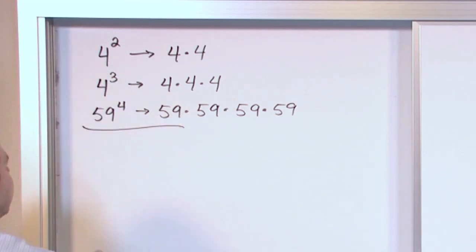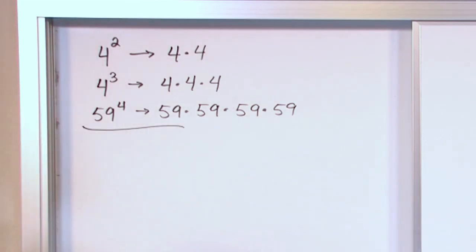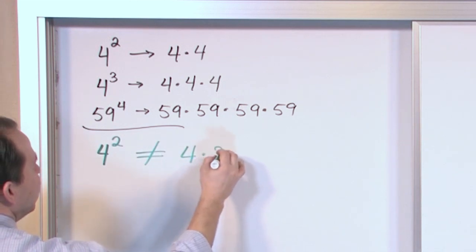One thing you must make sure that you do not get into the trap of is making the following mistake. Do not make the following mistake. Four squared, for instance, is not, that means not equal to, four times two.